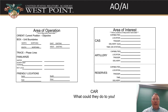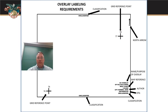Your AO and AI — understand where your area of operation is and how to brief it. For the area of interest, use the CAST acronym: artillery, reserves, and think about what could they do to you. That's the important part — focus your AI on what they can do to you. For overlay markings, make sure every overlay has all the required elements: classification top and bottom, at least two reference grids to line it up, a north-seeking arrow, and index information with the name or purpose of the overlay, the map you're using, who made it, a date-time group, and classification in the corner. All markings should be in black.